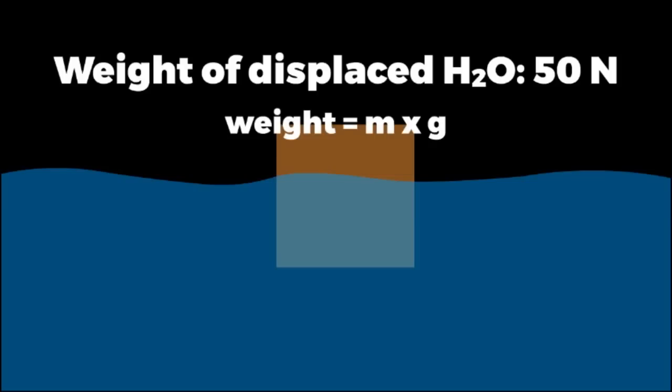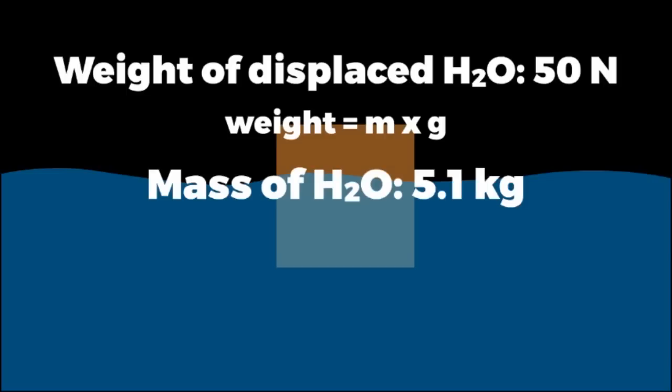Now, we know that weight is equal to mass times the acceleration due to gravity, which means that we can divide 50 by 9.8 meters per second squared to find the mass of the displaced water, 5.1 kilograms.